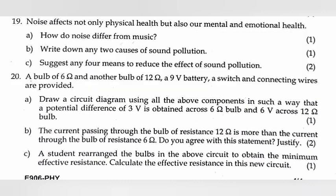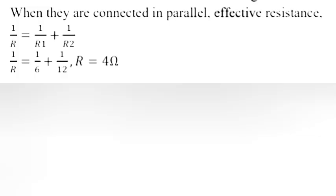C: A student rearranged the bulb in the above circuit to obtain the minimum effective resistance. Calculate the effective resistance in this new circuit. Answer: When they are connected in parallel, effective resistance 1 by R is equal to 1 by R1 plus 1 by R2. 1 by R is equal to 1 by 6 plus 1 by 12. R is equal to 4 Ohm.